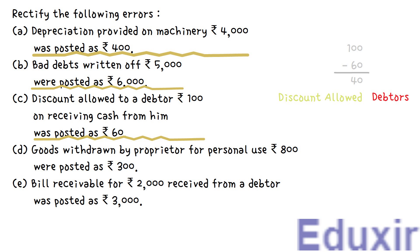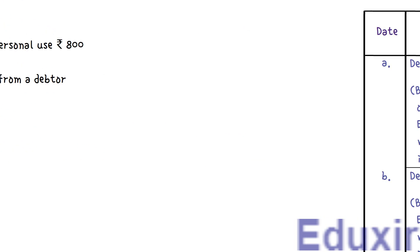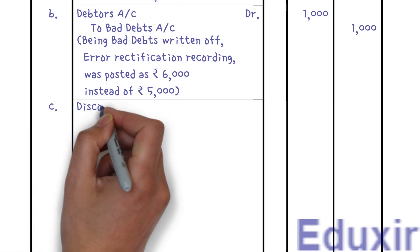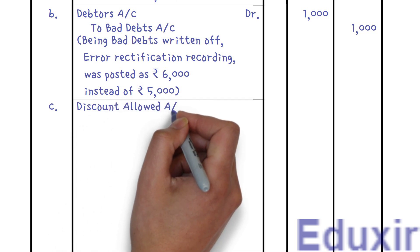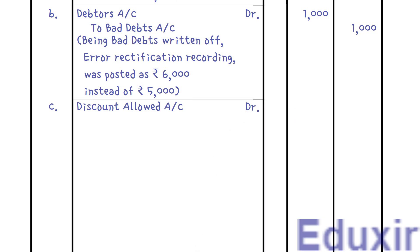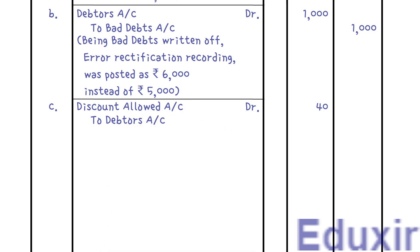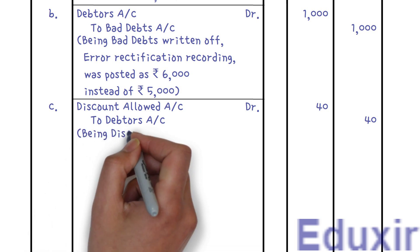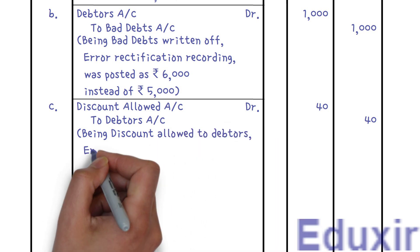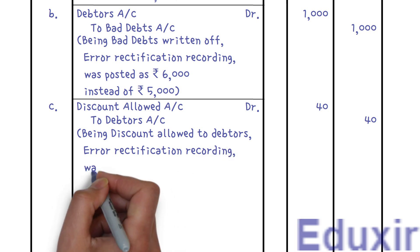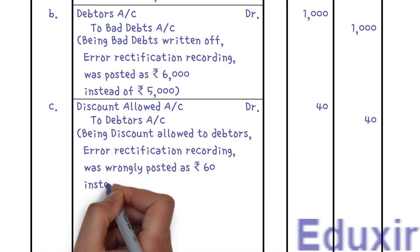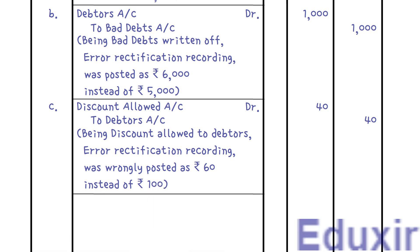With this analysis, let us proceed with journalizing these error rectification entries. We enter discount allowed account as the debit entry (Dr) with 40 rupees. The credit entry is debtors account with 40 rupees. The narration reads: being discount allowed to debtors, error rectification recording — was wrongly posted as 60 rupees instead of 100 rupees.